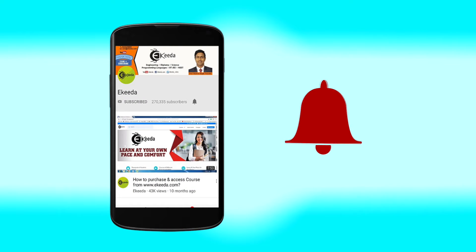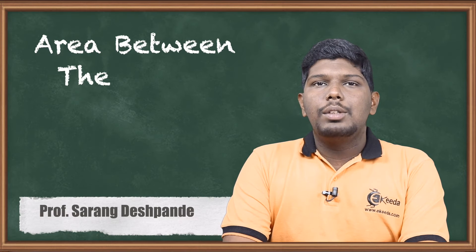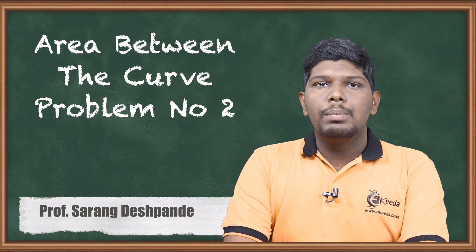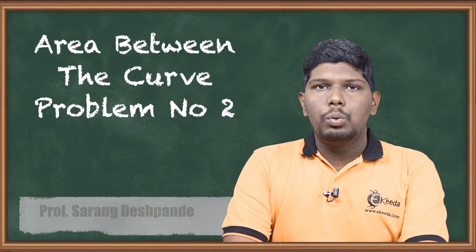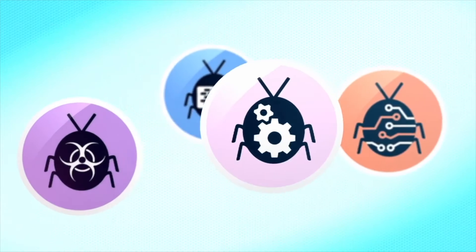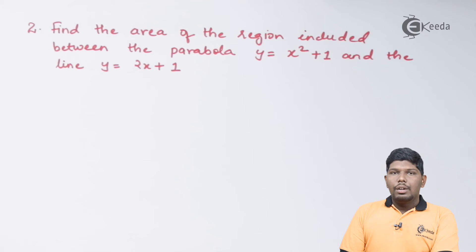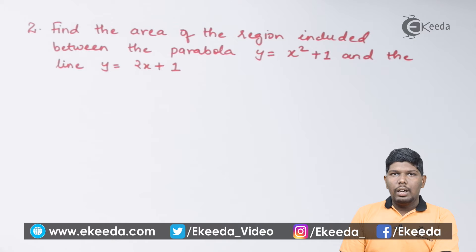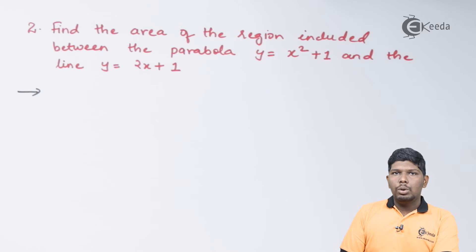Hello friends, in this video we are going to see one more problem based on area between two curves. Problem number two: find the area of the region included between the parabola y equals x squared plus 1 and the line y equals 2x plus 1. Let us start by finding the point of intersection of both curves.